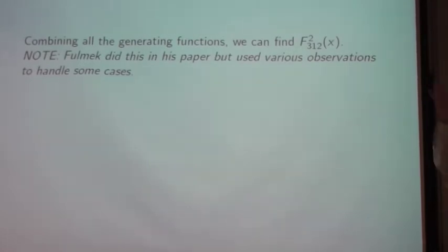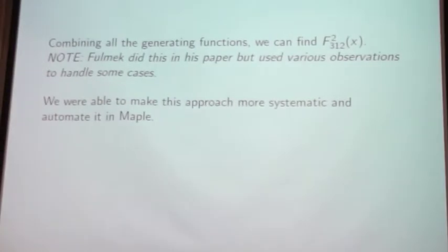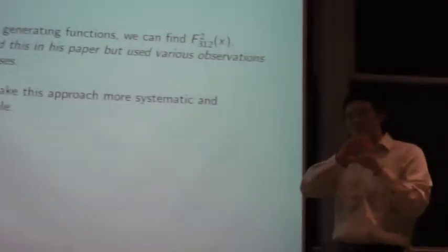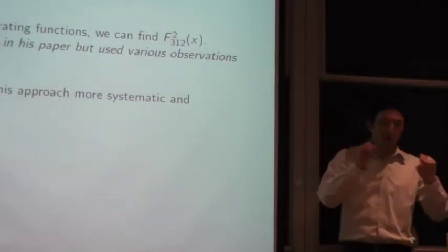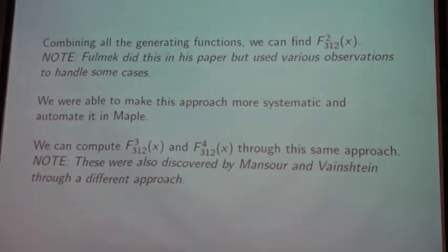And then, so by doing that for all the different pieces and combining all the generating functions, you can find the F2 generating function. And so this Fulmec did in his paper. But in his paper, he used a lot of observations, sort of symmetry arguments and such to reduce the number of cases he had to consider. And also, the setup, even for the R equals 2 case, wasn't conducive to extending it further. So, in this particular work, the goal was to study his approach, reformulate it in a way that can be made systematic, and then program it in Maple and have Maple compute more stuff.